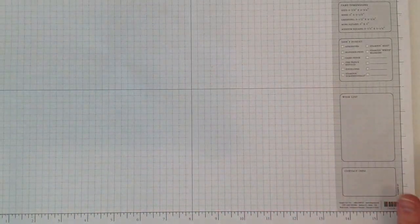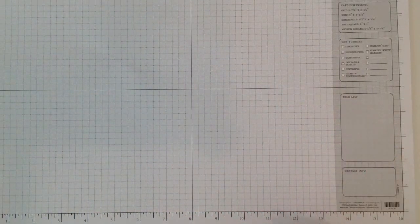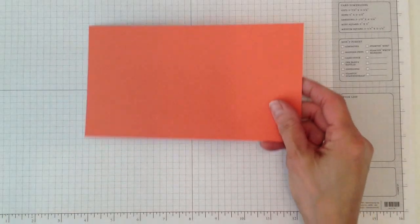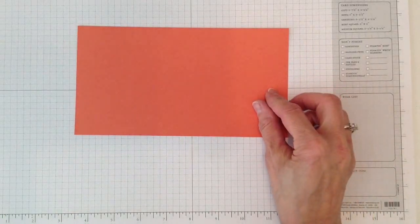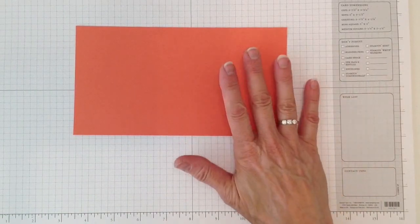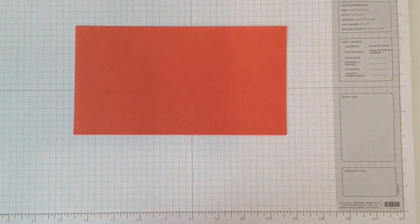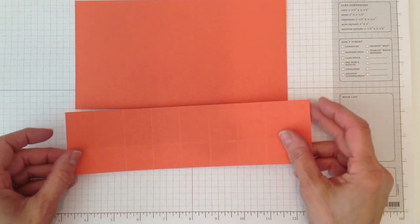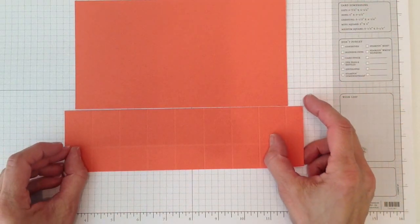So the first thing we're going to do is you're going to need a piece of eight and a quarter by four and a half piece of cardstock. You can use whatever you want. This is Tangerine Tango, and then you're going to need for the lid another piece that's nine and an eighth by two and a half.